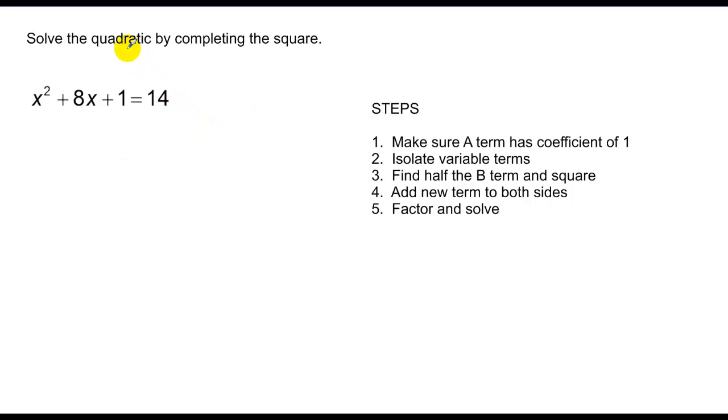So solving by completing the square. This is not capable of being squared or put into a perfect square term. So we're going to complete the square. In other words, try to make a perfect square term. In order to do that, I've got to follow these steps. First of all, make sure your a term, the term or coefficient in front of the x squared, has a coefficient of 1, which this does.